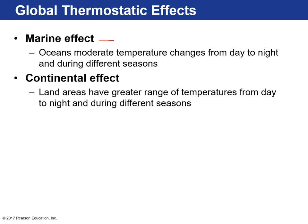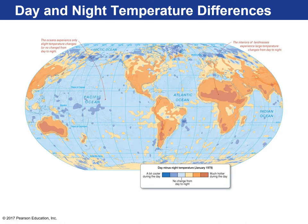This leads to the marine effect: if you're surrounded by an ocean, it moderates temperature from day to night, creating a smaller range in temperatures and making conditions milder. The continental effect is the opposite — because land has such low specific heat, it has a greater range of temperatures from day to night and between seasons. In the middle of the continent — say the Midwest — it's much hotter during the day than at night, with dramatic temperature swings.